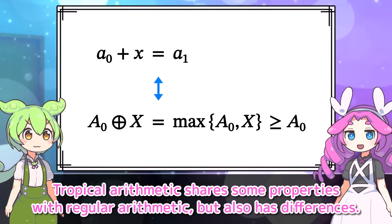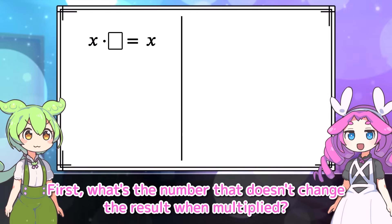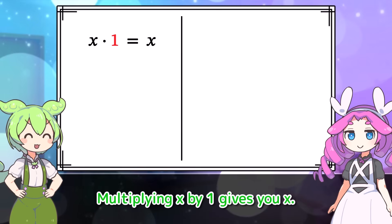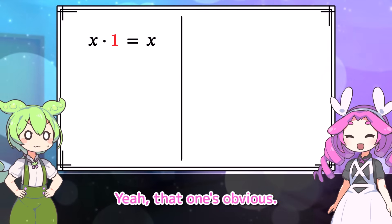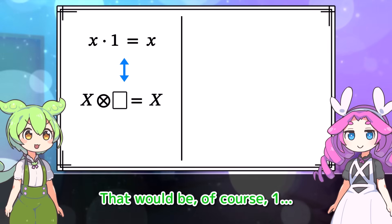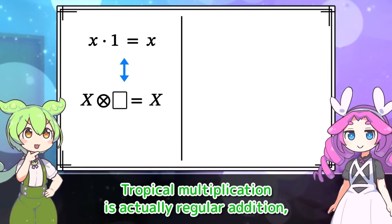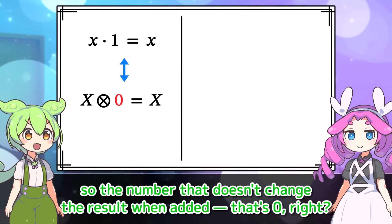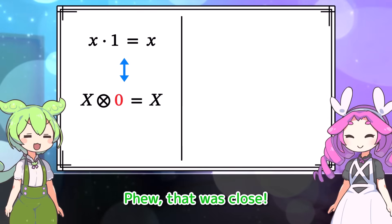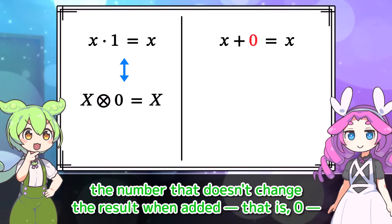Tropical arithmetic shares some properties with regular arithmetic, but also has differences — let's stay sharp. There are special values in regular addition and multiplication. What's the number that doesn't change the result when multiplied? It is 1. So what's the number that doesn't change the result when you multiply in the tropical world? Tropical multiplication is actually regular addition, so the number that doesn't change when added is 0. Exactly right. Then what does the additive identity 0 become in the tropical world? Since tropical addition is taking the maximum, it will be a number that doesn't affect the maximum.